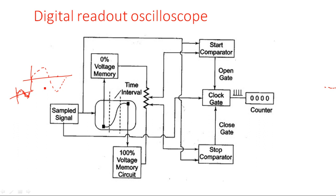The sampled signal contains only parts of the information — not the complete signal — but we can reconstruct the original from it. This sampled waveform is given to the CRT display, and the same signal also goes to the start comparator and stop comparator. The same sampled signal is also connected to the clock gate, which is used to allow and send digital data.